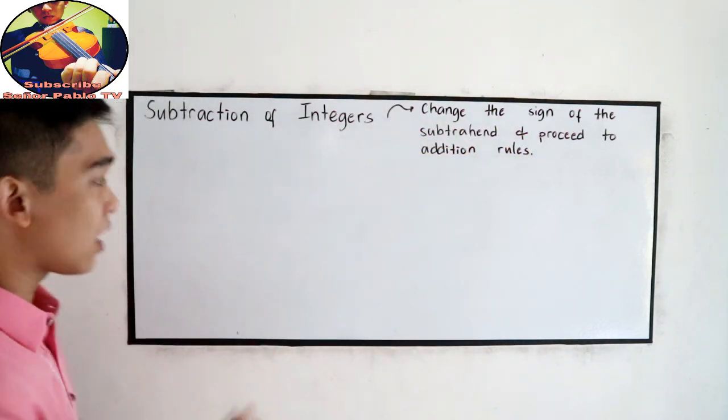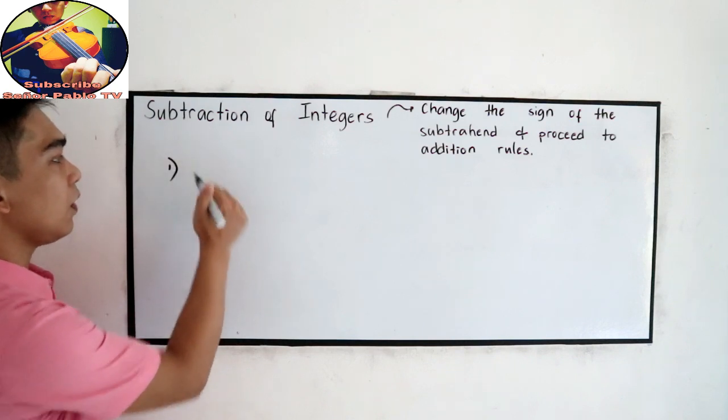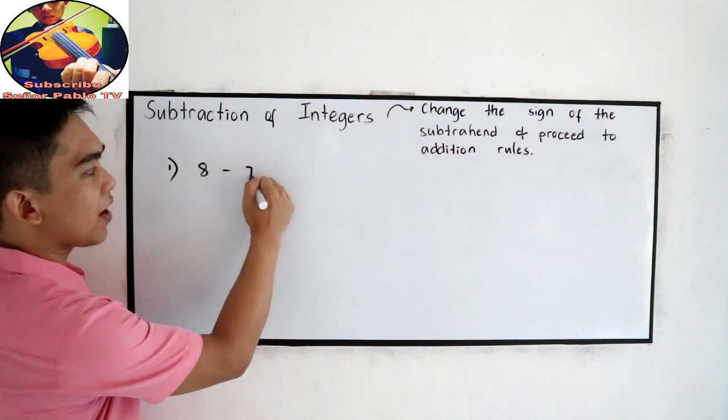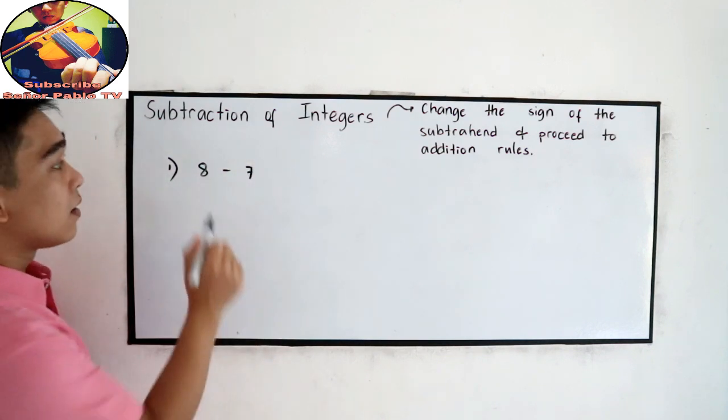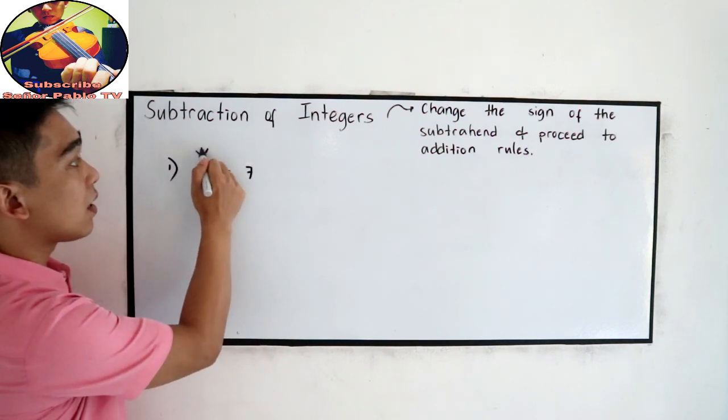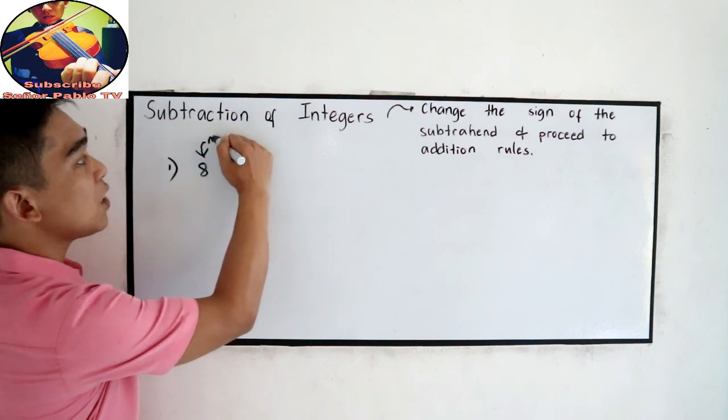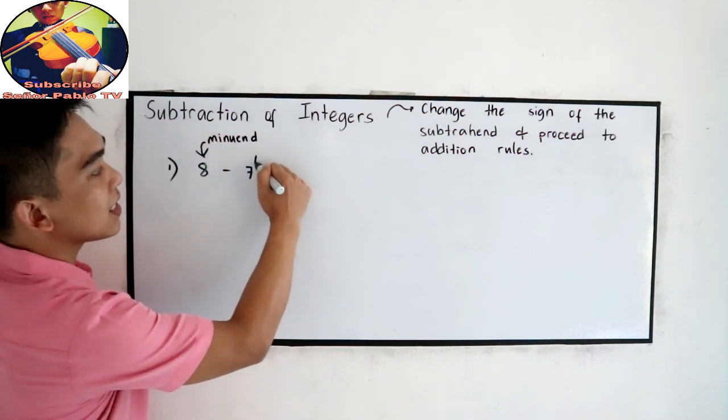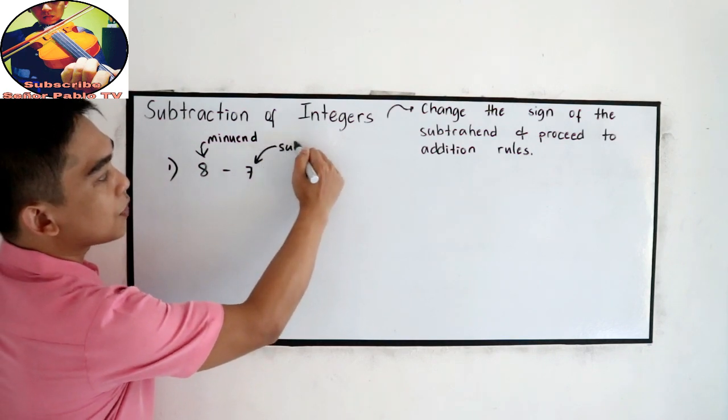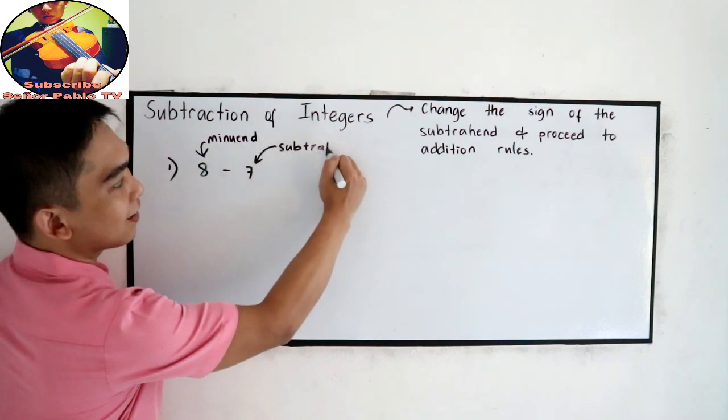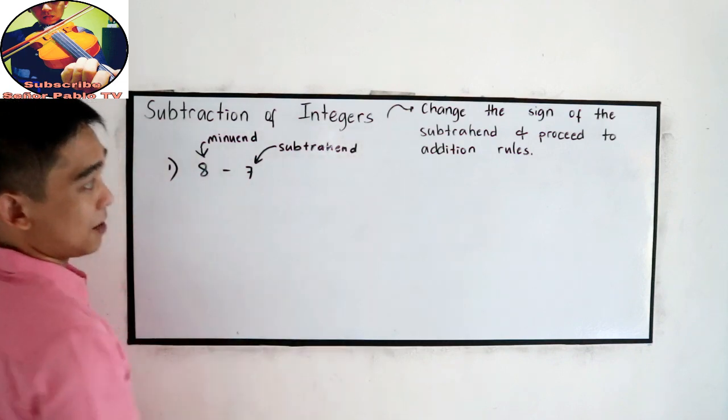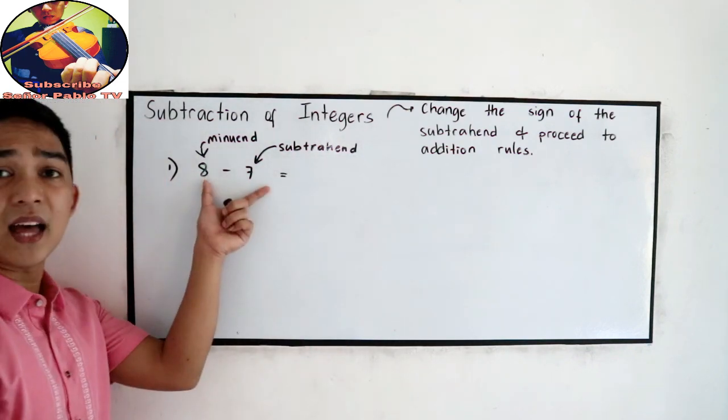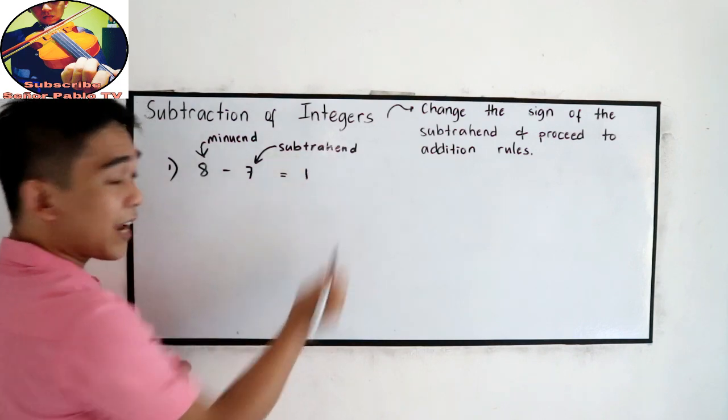Let's say, number 1, we have 8 minus 7. This is our minuend and this is our subtrahend. So basically, elementary math, this is equal to 1, right?